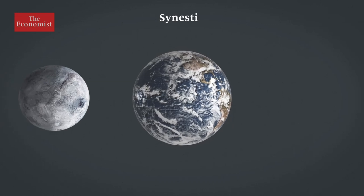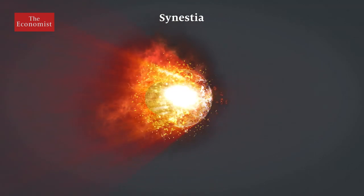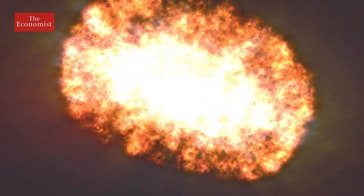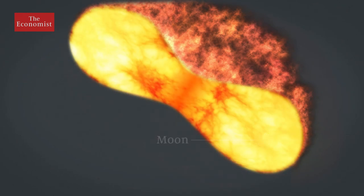The latest version of this theory involves the new idea of a synestia. In this theory, the impact fills nearby space with a donut of hot vapor. Both the moon and Earth are formed from the magma rain that resulted.